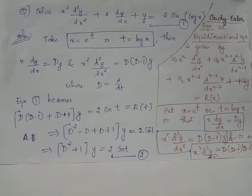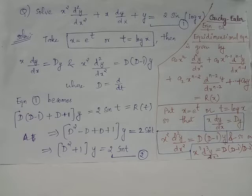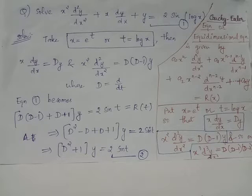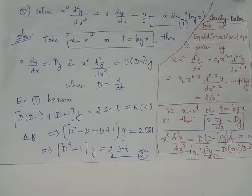Solve the differential equation x squared multiplied by d²y/dx² plus x dy/dx plus y equals 2 times sin(log x). This differential equation, numbered as equation 1, belongs to the class of Cauchy-Euler type differential equations. The coefficient of d²y/dx² is x² and the coefficient of dy/dx is x, which are variable coefficients.